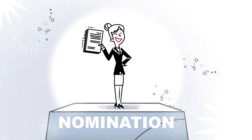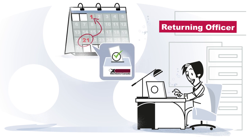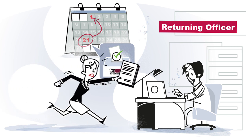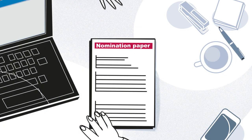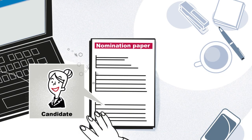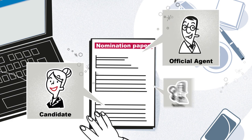Let's talk a bit about the nomination process. You must file your nomination paper with the returning officer by 2 p.m. local time on the 21st day before Election Day. The nomination paper includes details about you, your official agent and your auditor.